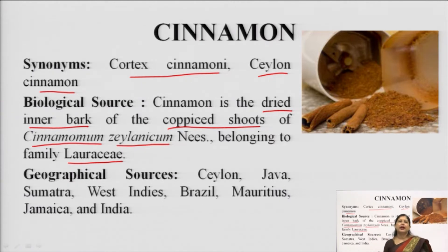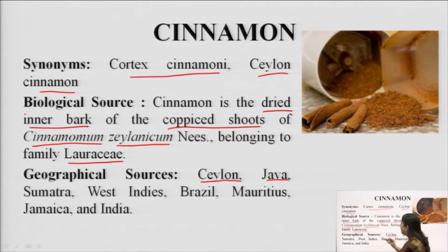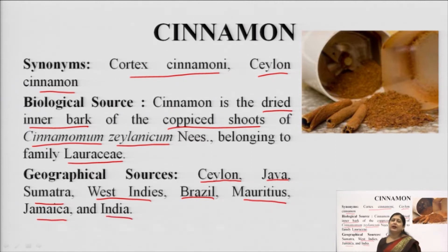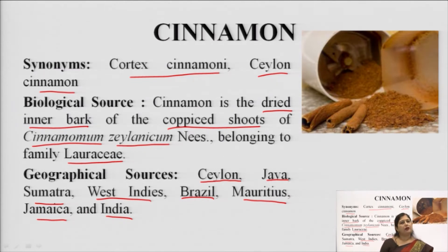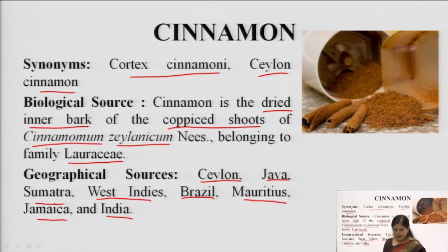The geographical source — as seen from the synonym Ceylon — it is found in Ceylon, Java, Sumatra, West Indies, Brazil, Mauritius, Jamaica and India. Generally it is found in coastal regions or island countries with a tropical climate. All spices or volatile oil containing drugs prefer growing in the tropical region and grow well in tropical and equable climate, which is found in coastal regions — countries like West Indies, Sumatra, Java and Mauritius are island countries where it grows easily.